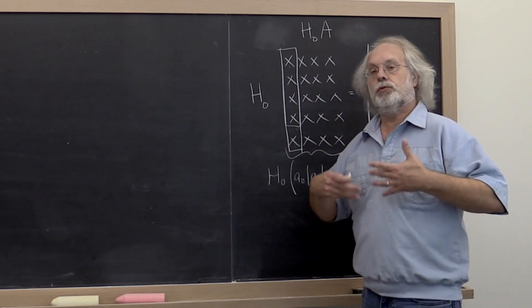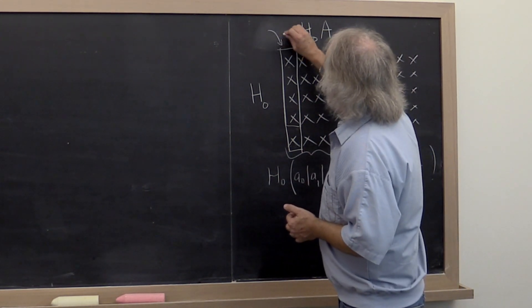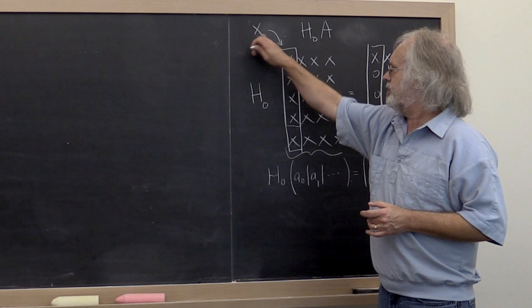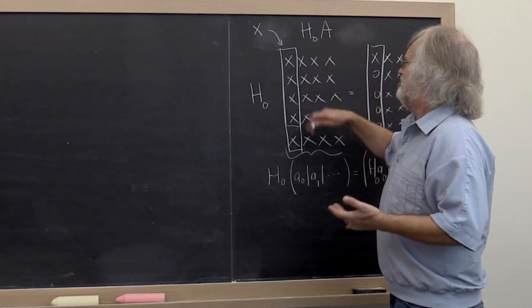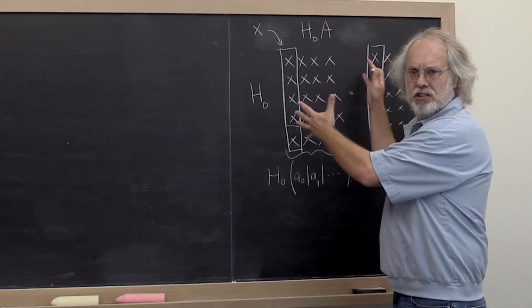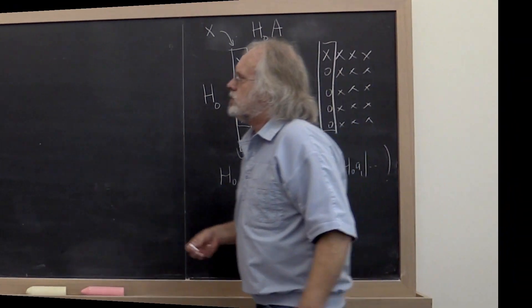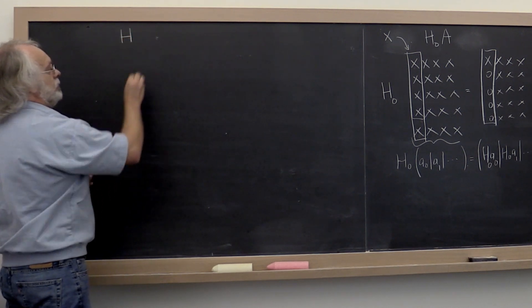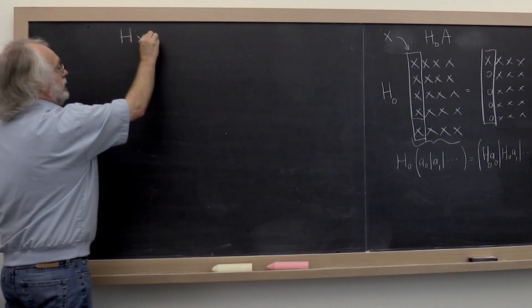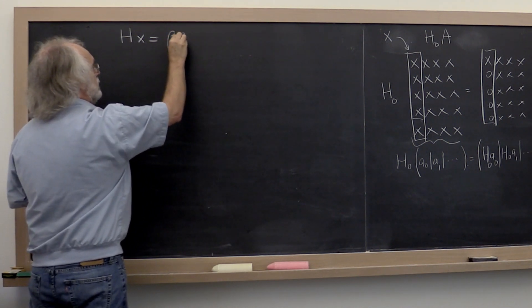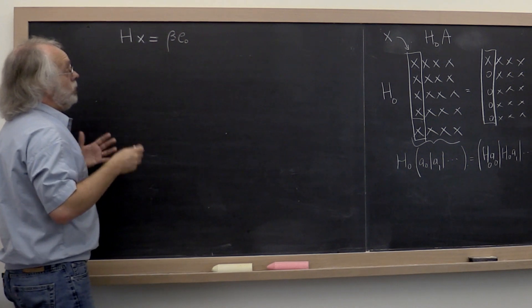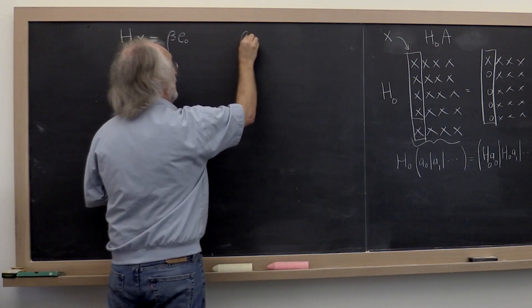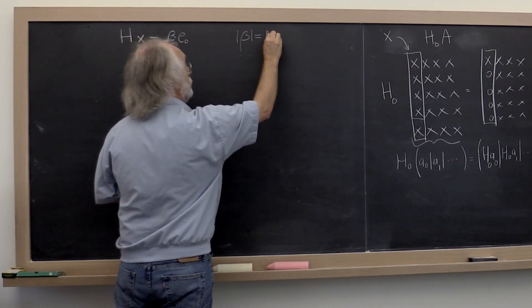Let's turn this into a more generic problem and call this first column the vector x. The problem we really want to answer is: what Householder transform H transforms a vector x into the vector β times e0? Notice H preserves length, and therefore we know that the absolute value of β must be equal to the 2-norm of x.